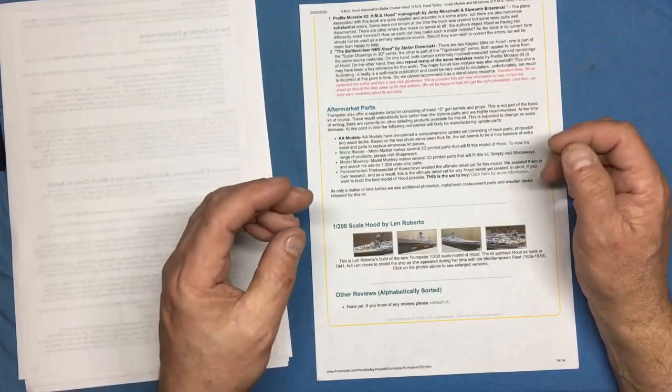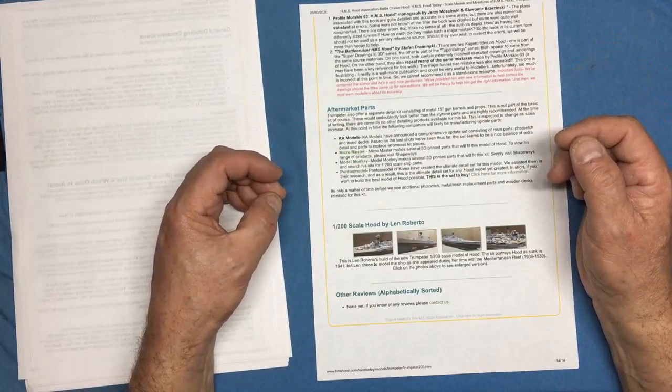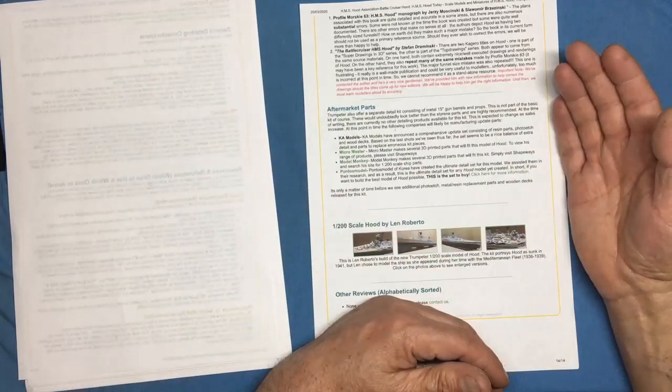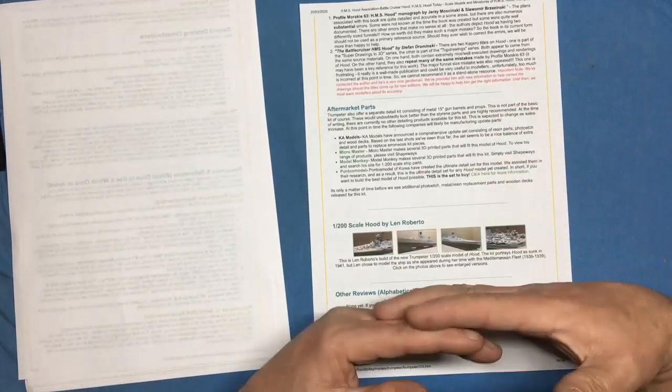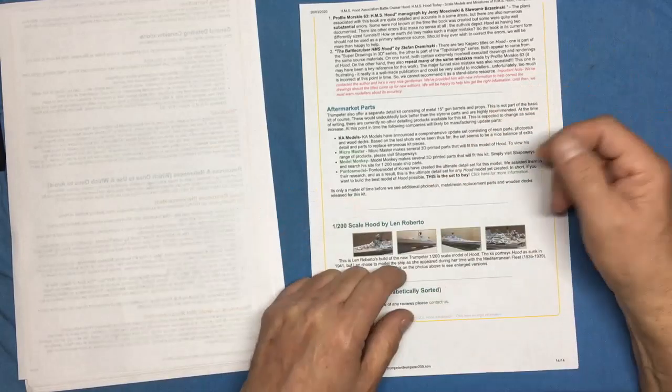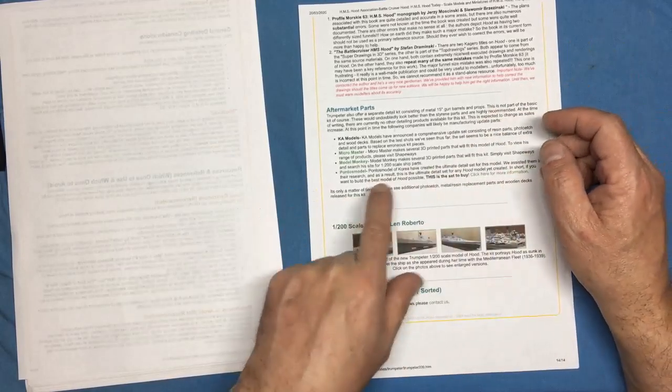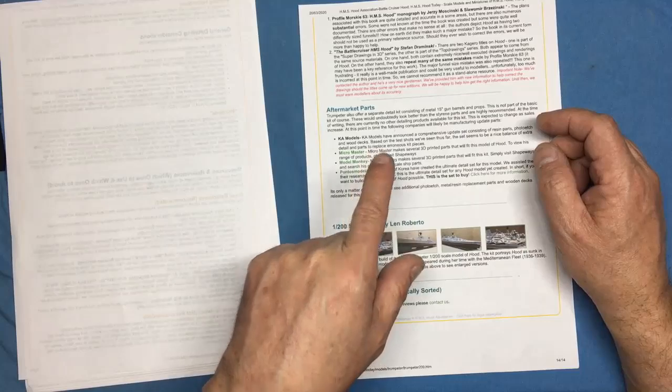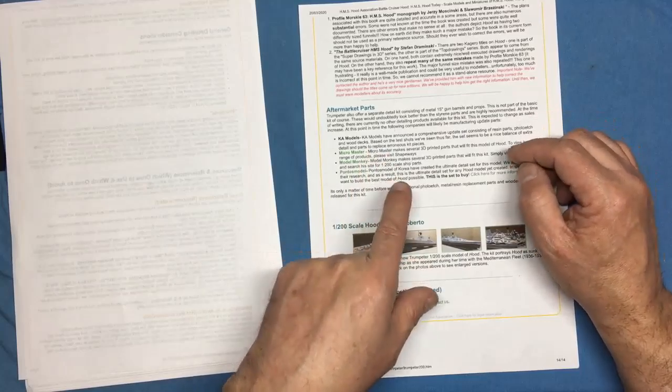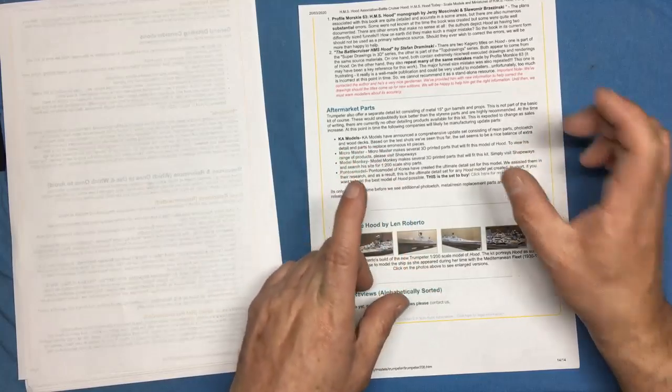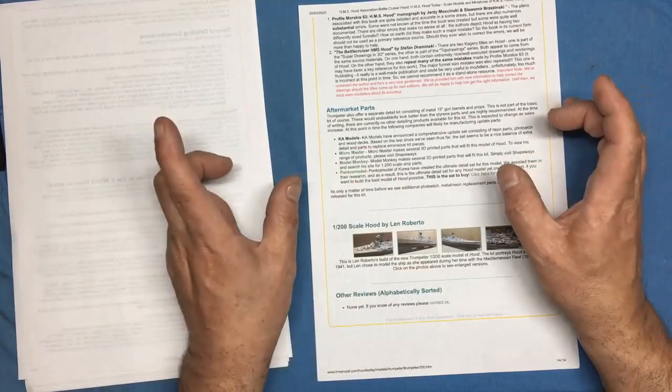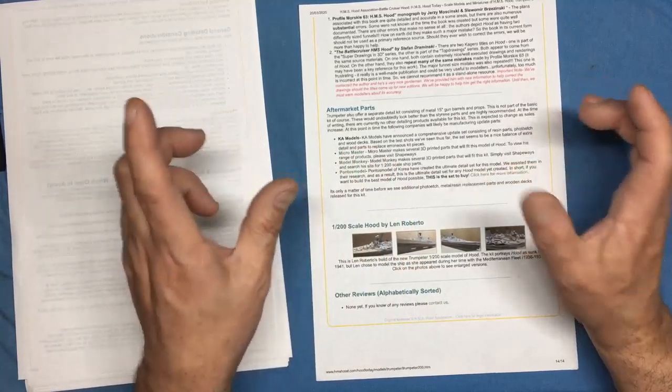You must remember that guys like me who want accuracy will go to any length to make something, make a master, take a mold of it, completely restructure something just to get a bit of accuracy. Other people don't want to do that. Other people just want to build the model out the box. But some people want to build the model out the box, add a detail set without doing too much modification.